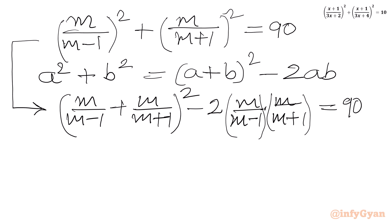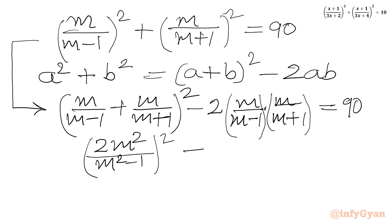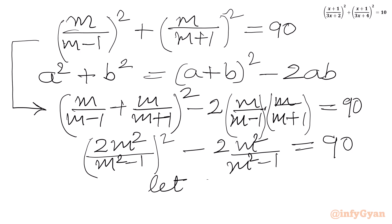Simplifying the brackets: we get m²+m², so after simplification 2m²/[(m+1)(m−1)] which gives m²−1. Then the complete expression is (2m²/(m²−1))² − 2×(m²/(m²−1)) equal to 90. We can see that 2m²/(m²−1) appears twice — this is a quadratic in 2m²/(m²−1). Let 2m²/(m²−1) equal to A.